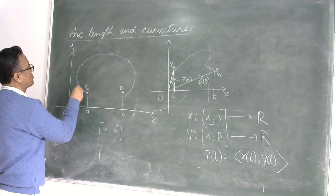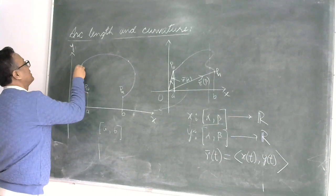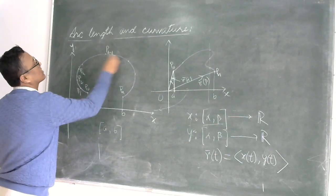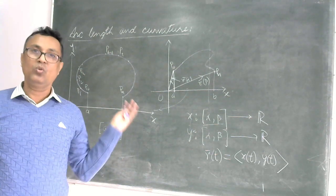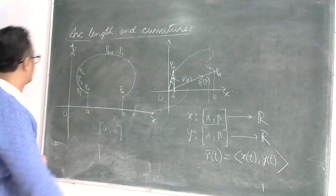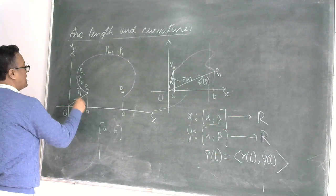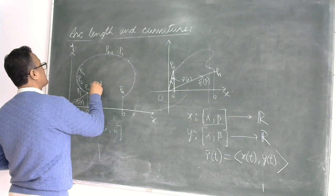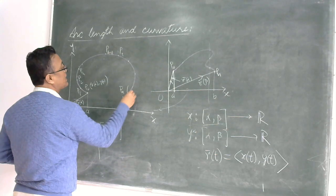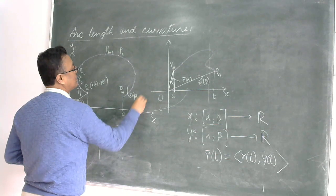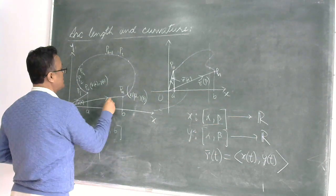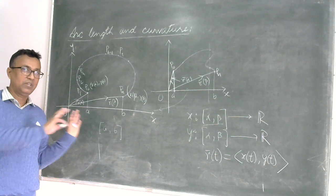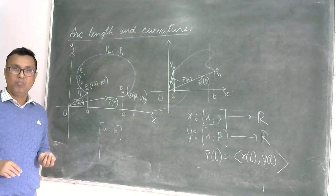Whatever procedure we adopted before is still going to work here. We simply take points p1, p2, p3, ..., p_{i-1}, p_i on this curve, and the earlier procedure from the previous class is still valid. This point p_0 still corresponds to r(alpha) with coordinates (x(alpha), y(alpha)), and similarly p_n has coordinates (x(beta), y(beta)), which we designate as r(beta). I hope the confusion is completely cleared up now.